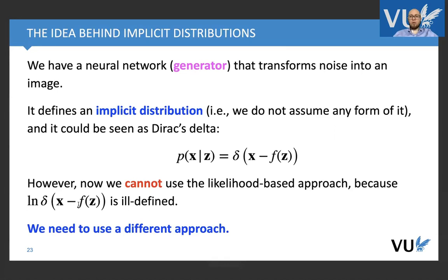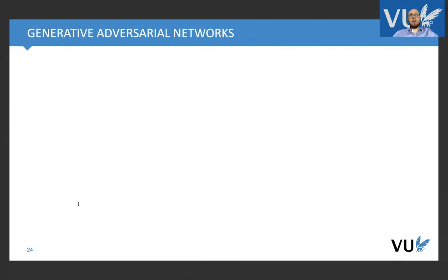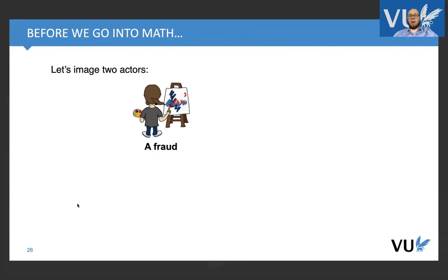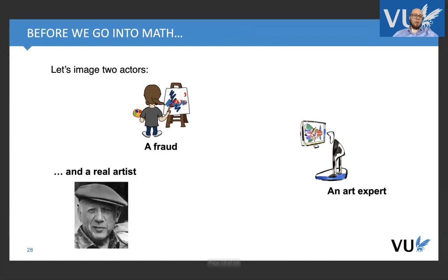For this different approach, we had to wait 15 years after these density networks. This is called Generative Adversarial Networks, or GANs for short. What is the idea behind it? Let's imagine that we have two actors. We have a fraud, for instance a painter, and we have an expert that is able to evaluate, assess a picture.